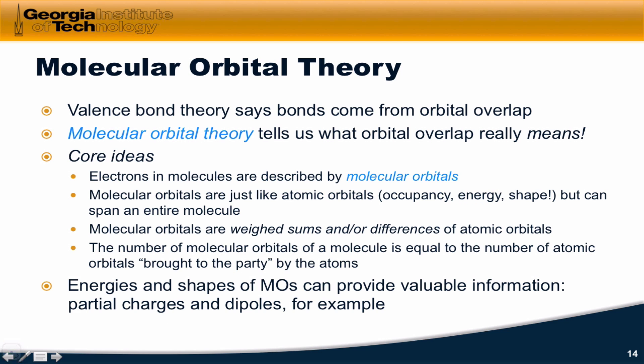The number of molecular orbitals in a molecule is equal to the total number of atomic orbitals of the atoms involved. The energies and shapes of molecular orbitals can provide some valuable information, such as the partial charges on atoms, whether they're partially positive or partially negative, and dipole moments, which tell us where electrons are located within molecules in a pretty general way.